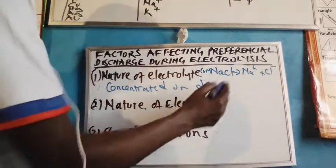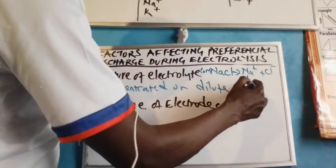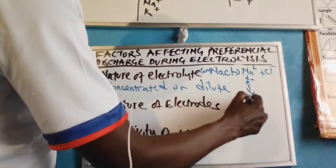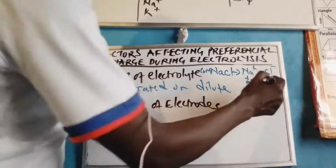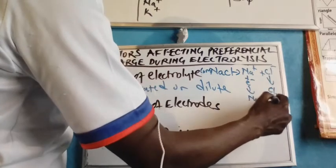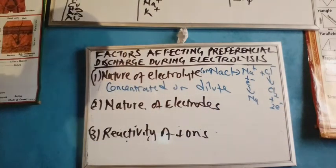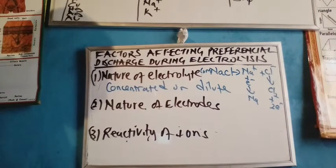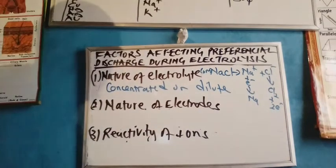Since sodium ions are positive, they are discharged at the cathode by the process of reduction. Chloride ions, being negative, are discharged at the anode by the process of oxidation and they form chlorine gas. Therefore, in respect to the nature of the electrolyte, when the electrolyte is concentrated, the only ions discharged are the ions present in the electrolyte.